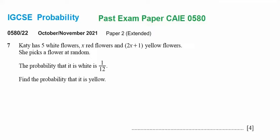This is the second part of the video related to IGCSE probability — October/November 2021 Paper 2 Extended, Variant 2, Question 7. Catty has five white flowers, x red flowers, and 2x plus one yellow flowers.